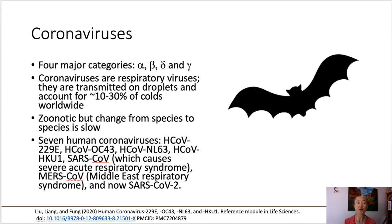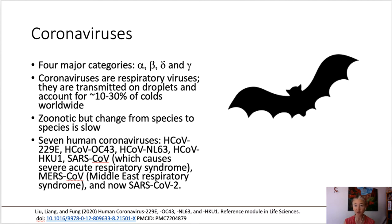There's a really cool term called zoonotic. We can say that coronaviruses are zoonoses — that is, they are transmitted from one species to another. As we see changes in our climate and as we encroach upon animal territory, we sometimes see that viruses begin to move from one host to another. There are seven human coronaviruses out there.